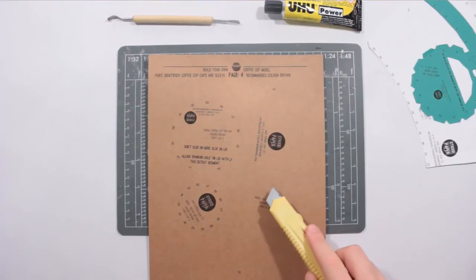With this one you've got the sleeve, the top of the cup, and the bottom of the cup, so let's cut out and score.